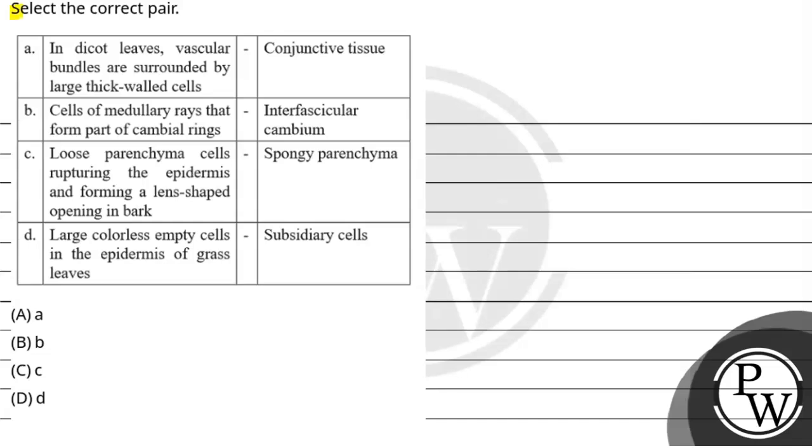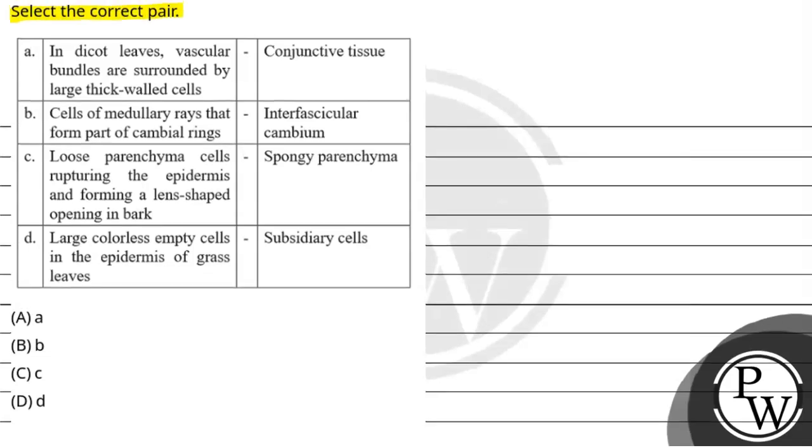Hello, so let's read the question. The question says select the correct pair. First column: in dicot leaves, vascular bundles are surrounded by large thick walled cells. Second is cells of the medullary rays that form a part of the cambium rings. Third, loose parenchyma cells rupturing the epidermis and forming a lens-shaped opening in the bark. And fourth, the large colorless empty cells in the epidermis of the grass leaves.